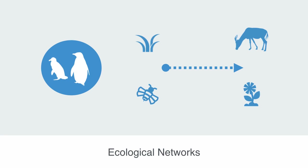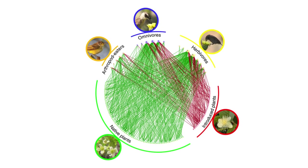As an example, we can take a look at this trophic network with data taken from 12 Galapagos islands, indicating the interactions between the different creatures in the food web. This network considers 19 land bird species and 106 plant species.